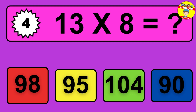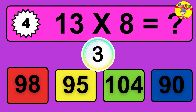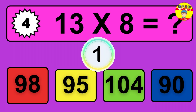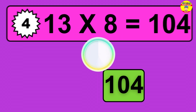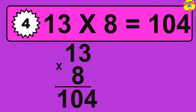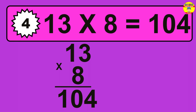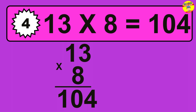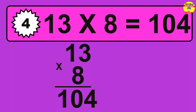Question 4. 13 times 8 equals what? The answer is 13 times 8 equals 104. To calculate, we have 13 groups with 8 balls each one. So, how many balls do we have? 104 balls.